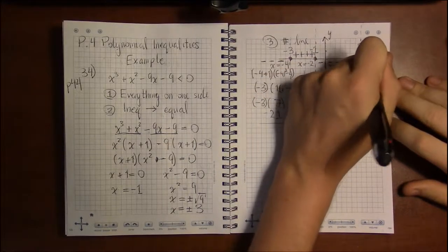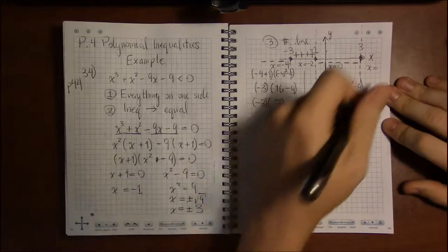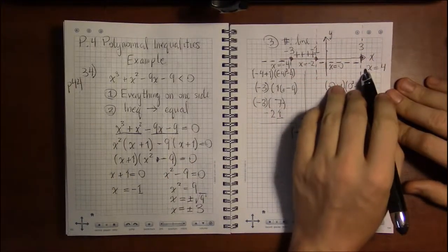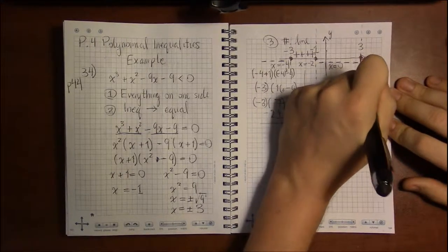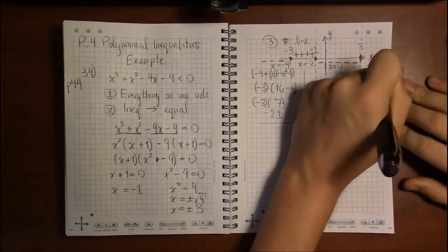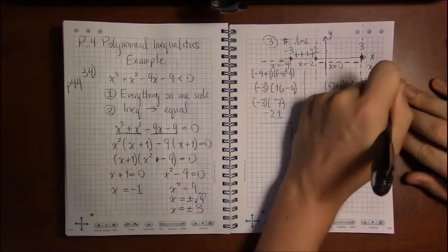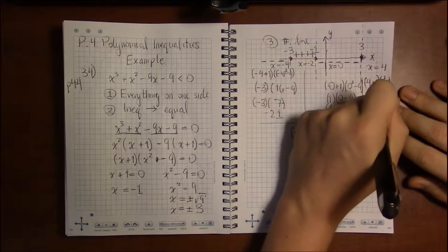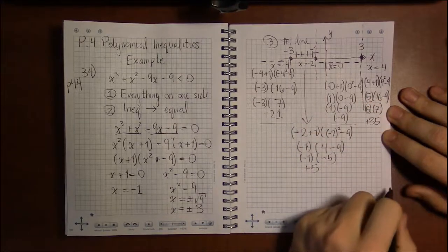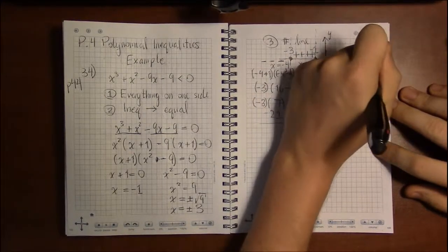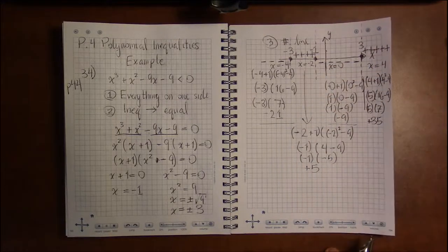For the interval to the right of three, I'll use x equals four, which satisfies the condition and is easy to evaluate. Four plus one is five, four squared is sixteen, sixteen minus nine is seven, and five times seven is thirty-five — a positive value. So I write pluses above the x-axis for this rightmost interval.